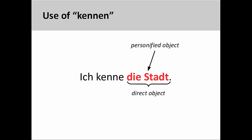We can also use Kennen with objects. In the sentence 'Ich kenne die Stadt' — I know the city — the direct object is not a person, although living in the city allows me to know it as if it were a person, and I have developed a close relationship to it. Since the object has been personified in this manner, the verb Kennen can be used.